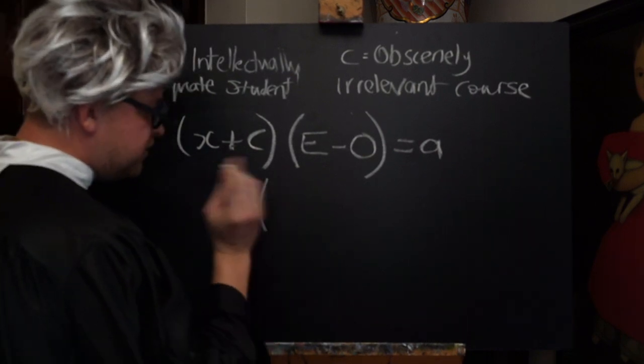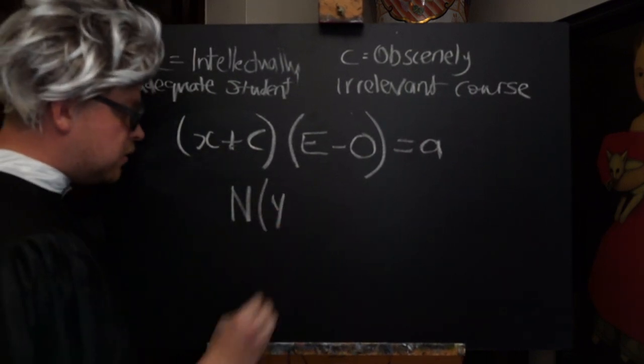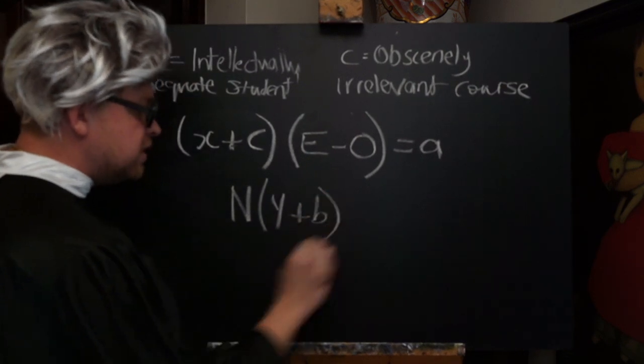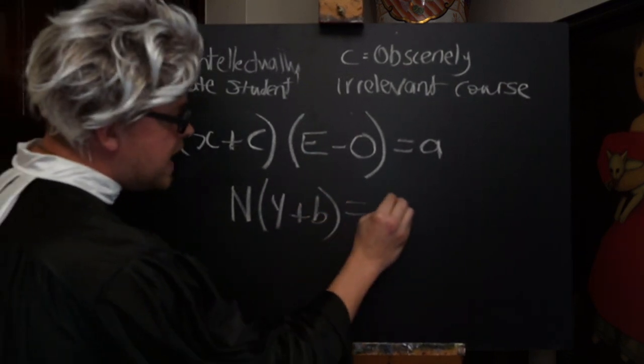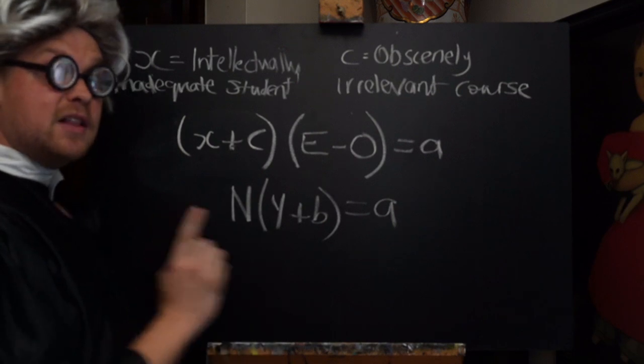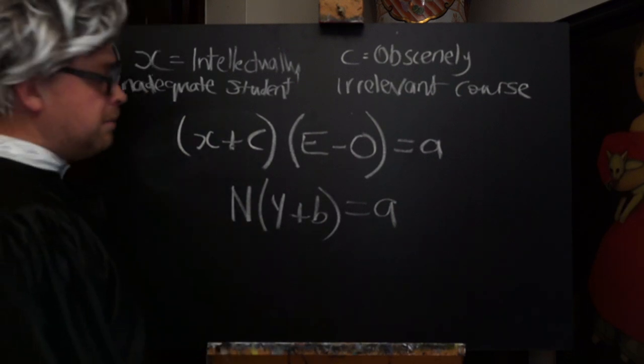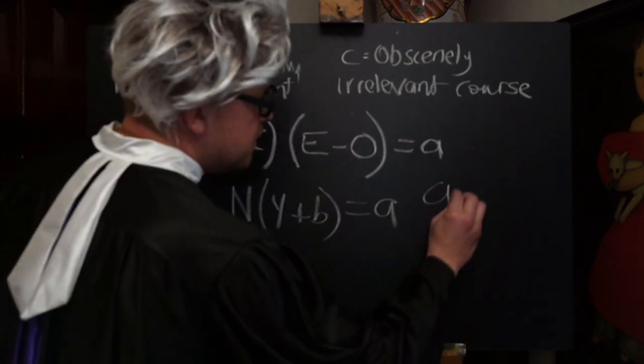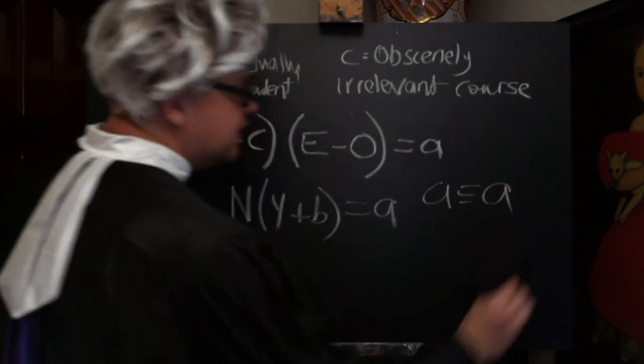And then, if we multiply this by Y, Academic Outlook, plus B, Government Benefits, then we get A again. But this time we get the Adult Activist. And because it's actually the same, we can just say A is an identity to A.